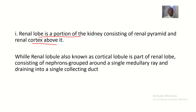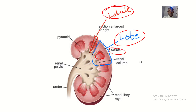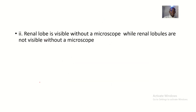The renal lobule — also known as the cortical lobule — is part of the renal lobe. This part of the renal lobe consists of nephrons that are grouped around a single medullary ray, and these nephrons drain urine into a single collecting duct. The nephrons grouped around that single medullary ray are what we call a renal lobule.